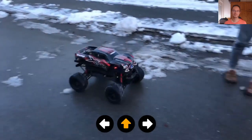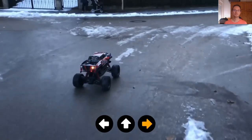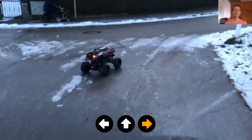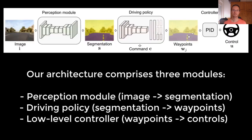Our driving policy generalizes to various previously unseen environments. We address the problem of transfer via modularity and abstraction, combining the benefits of deep learning and classic modular pipelines for autonomous driving. Our architecture comprises three modules: perception module, driving policy, and low-level controller.